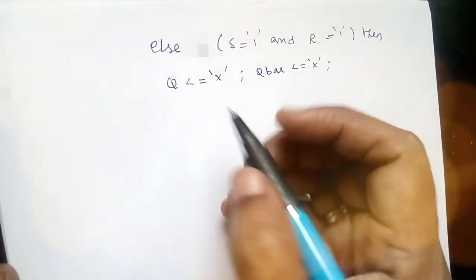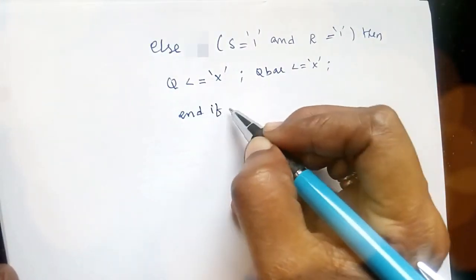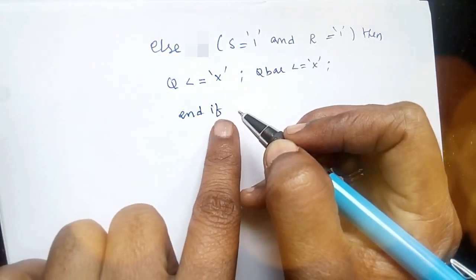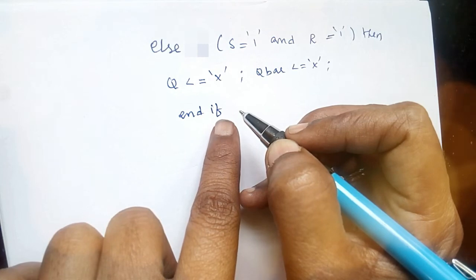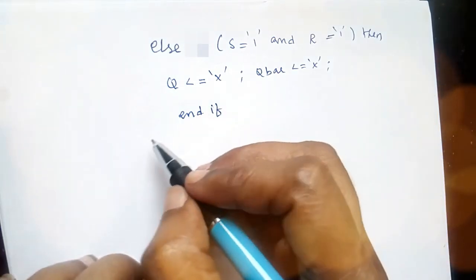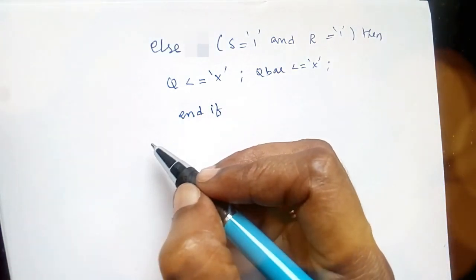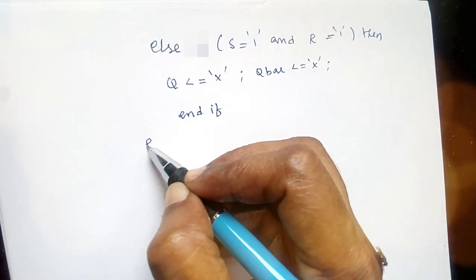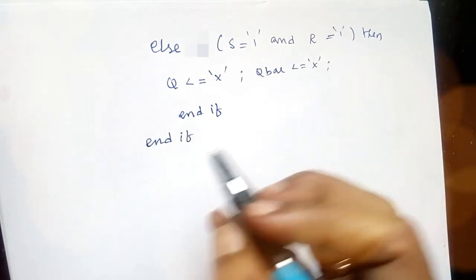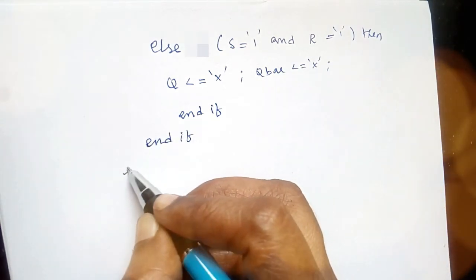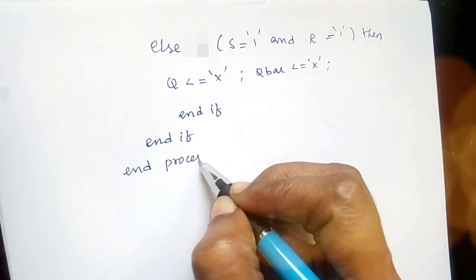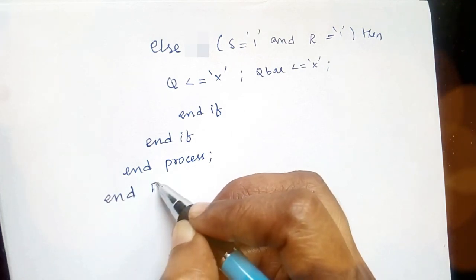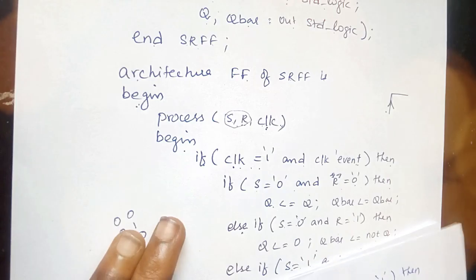We are done checking all S and R conditions so we write 'end if' to close the S-R condition block. We then write another 'end if' to close the clock pulse if statement, followed by 'end process' to end the process, and finally we end the architecture with its name. Hope you understood, thank you.